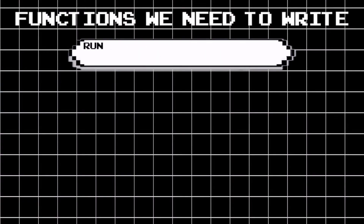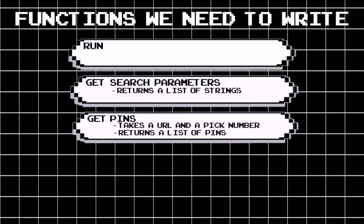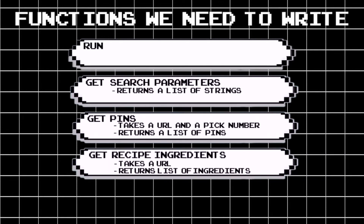Now let's look at the functions we need to write. Our first function is 'run' — we won't be passing or returning any data, but we'll use it to invoke our getters. Our second function is 'getSearchParameters', which returns a list of search strings we'll provide to Pinterest. Our third function is 'getPins', which takes a URL and a pick number, then returns a list of pins the length of our pick number. Lastly, we have 'getRecipeIngredients', which takes a URL and returns the ingredients, if any, from Pinterest.